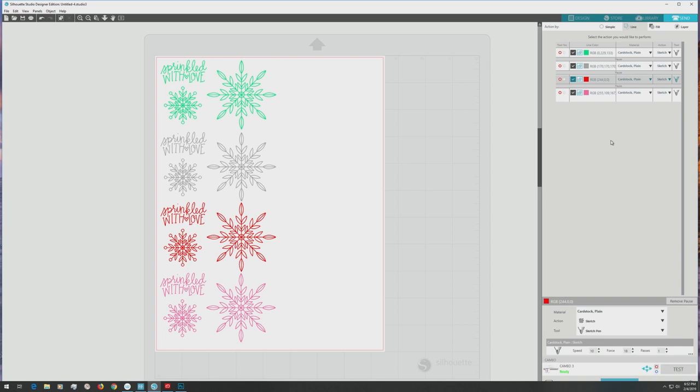I added a pause between each row color so I can change out my pens at the pause and then unpause and continue sketching with the next color. If you're interested in seeing a video about how I set up these types of files for sketching with multiple pen colors, just let me know in the comments below.